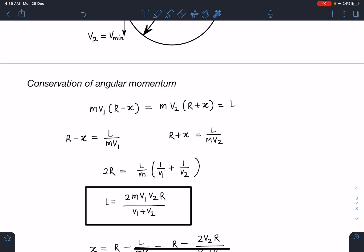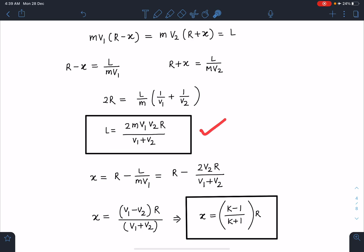If I substitute this value of angular momentum in one of the equations, I'll be getting the value of x. I'm writing it as x equals r minus L/(m·v₁). So L/(m·v₁) from here is going to be 2v₂·r/(v₁ plus v₂). Therefore x equals (v₁ minus v₂)·r/(v₁ plus v₂). In terms of k, since v₁/v₂ equals k, x is going to be (k minus 1)/(k plus 1) times r. This is the location of that point P. It will be lying within the circle at a distance of x from the center of it.